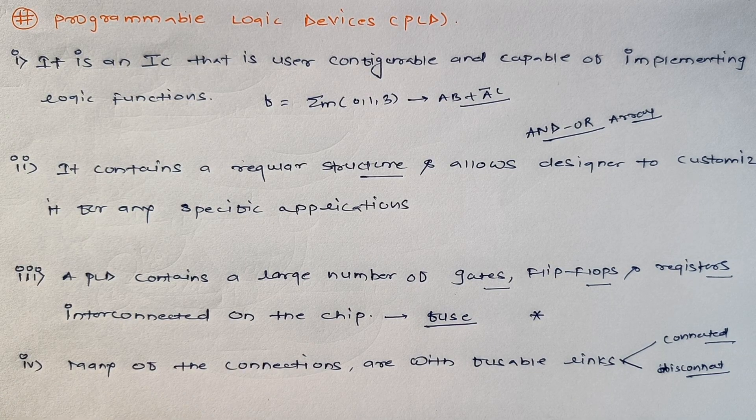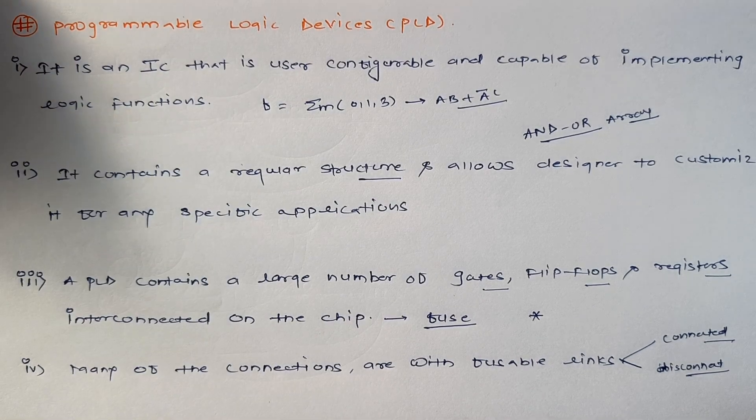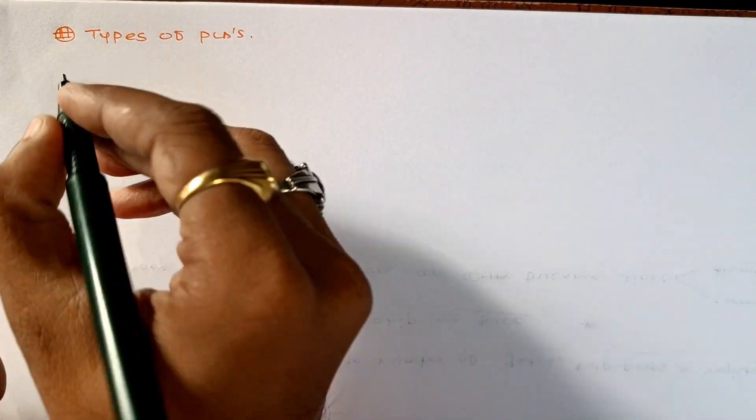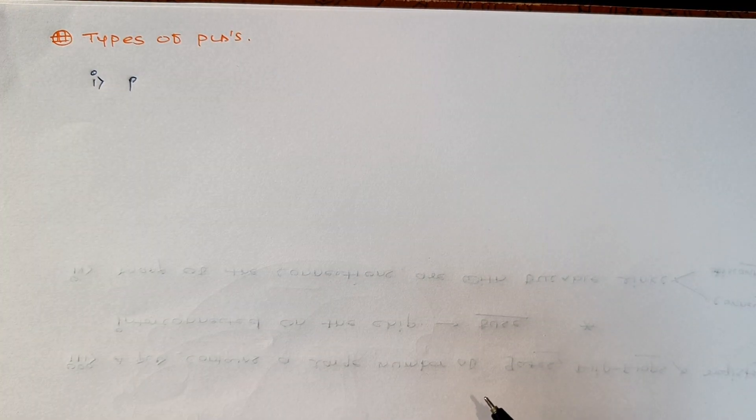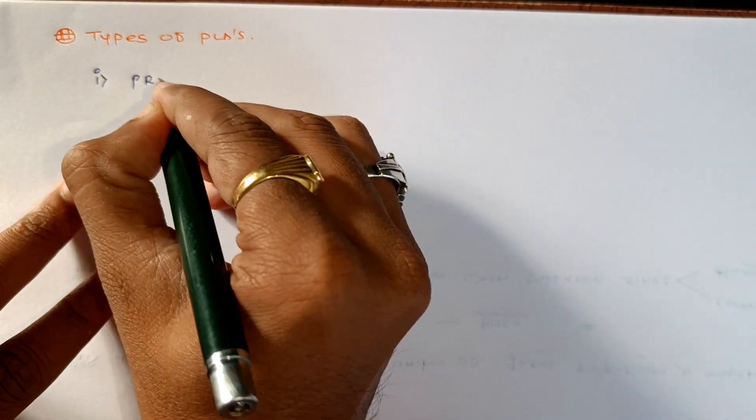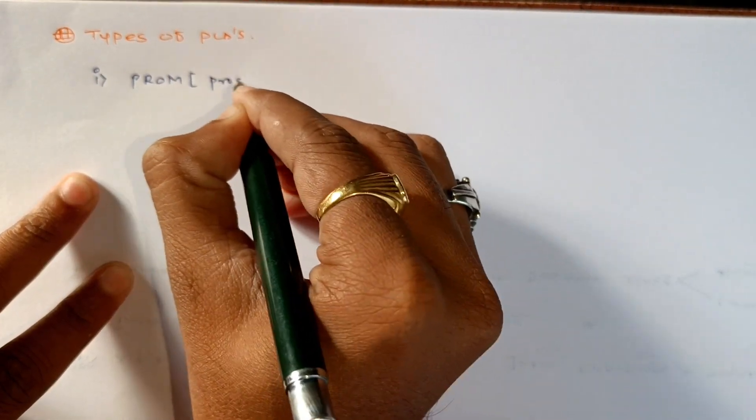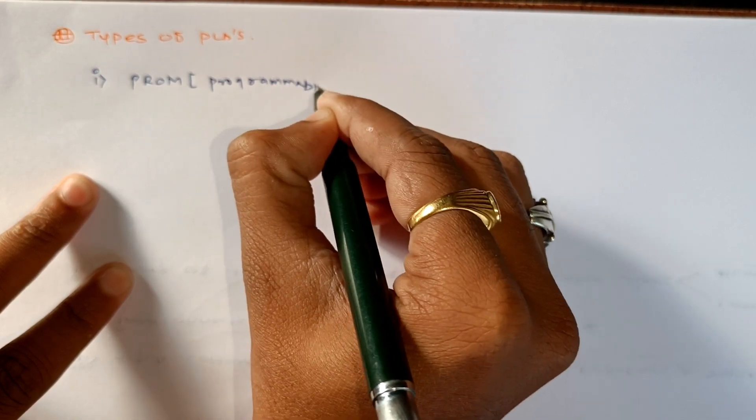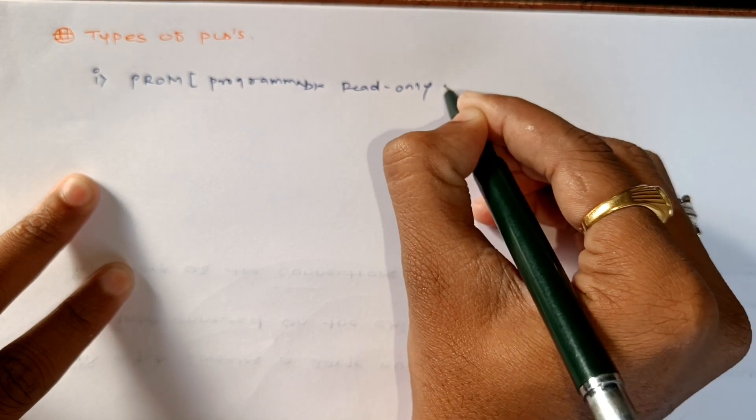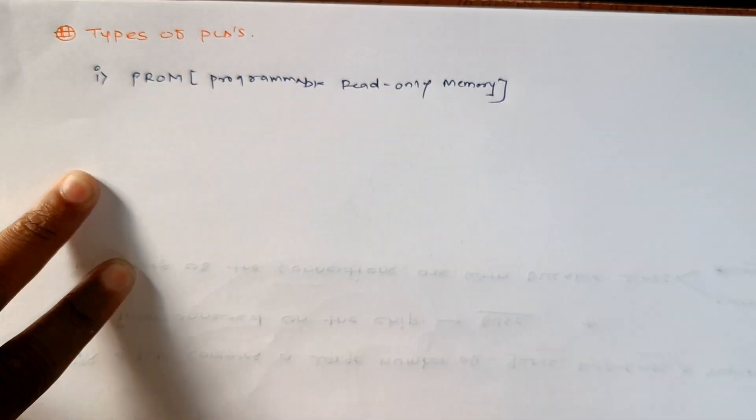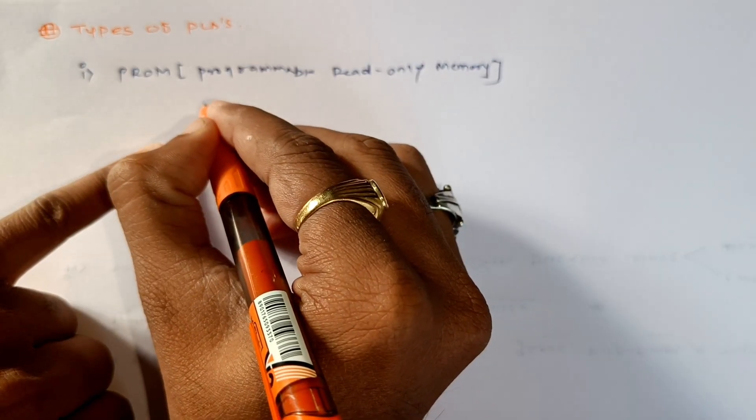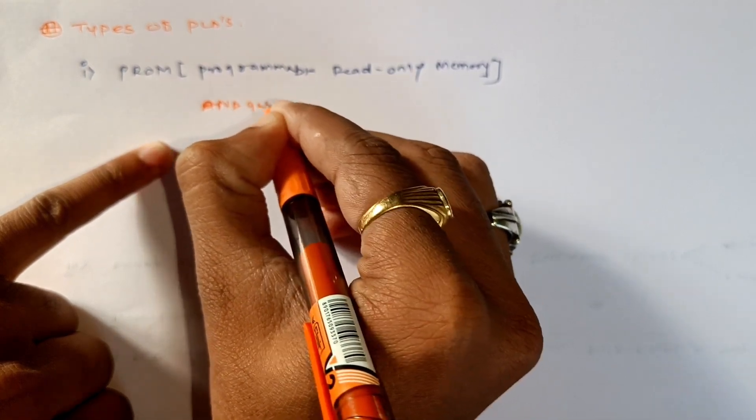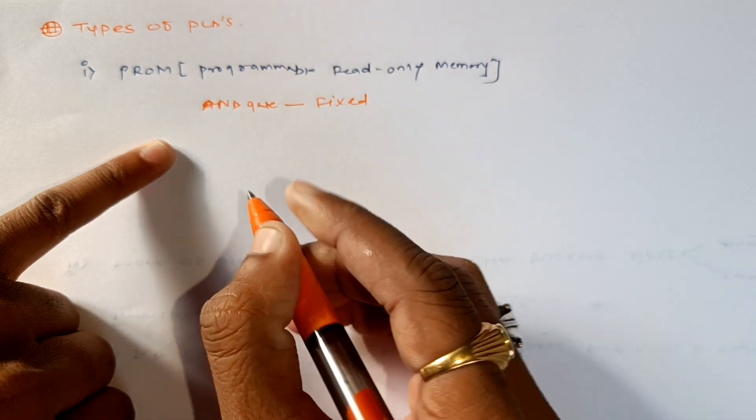Most widely used elements for designing combination and sequential circuits are going to be our programmable logic devices. Now let us come across the types of PLDs. Basically we have three types of PLDs. The first one is called PROM, or we can say programmable read-only memory. It is a type of PLD in which AND gate is fixed.